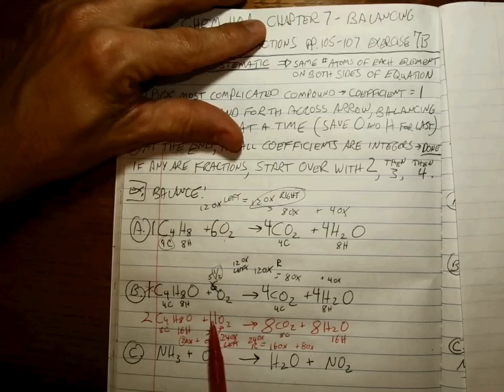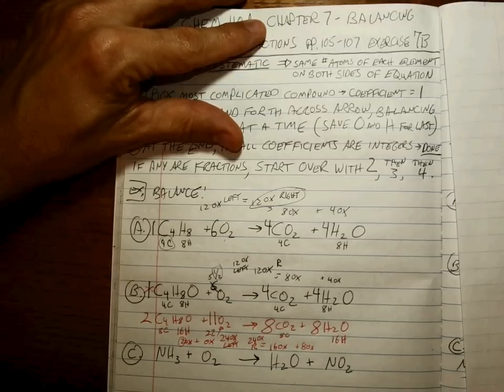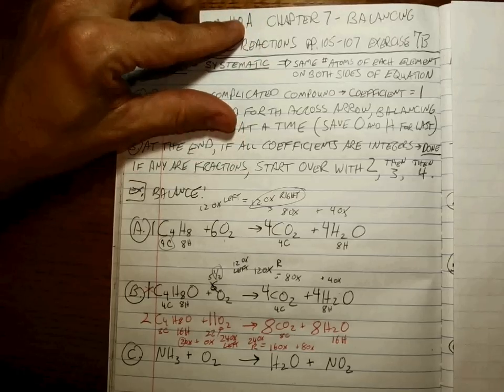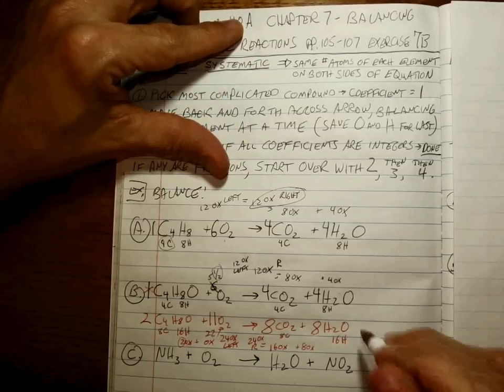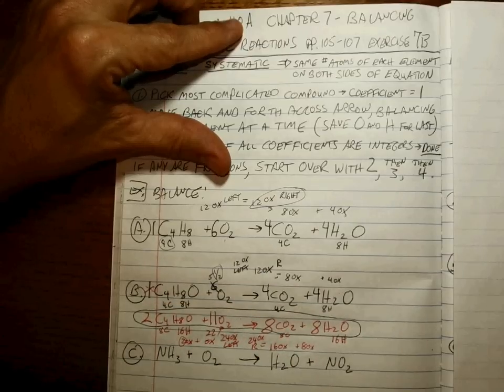So check your work. 22 plus 2 is 24 oxygens. Everything else balances. There you go. You just have to be systematic and things go a lot faster than if you try different numbers and hope it all works out. This is the balanced equation here.